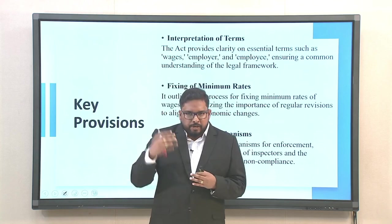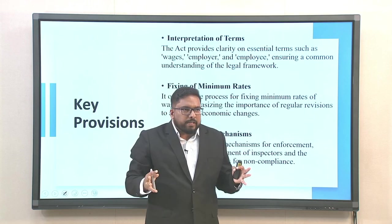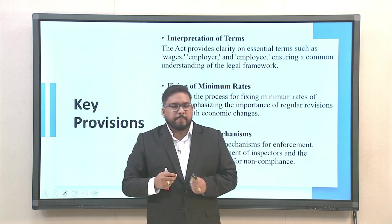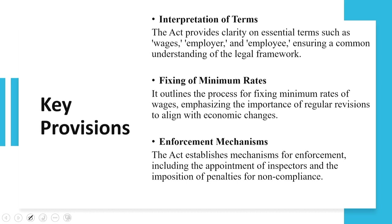Now let us look into the key provisions from the interpretation of terms perspective, fixing of minimum rates for particular work, and the enforcement mechanism. The act provides clarity on essential terms such as wages. Adolescent means a person who has completed their fourteenth year of age but has not completed their eighteenth year. Adult means a person who has completed their eighteenth year of age and above. All these words have certain ramifications when it comes to this particular act.